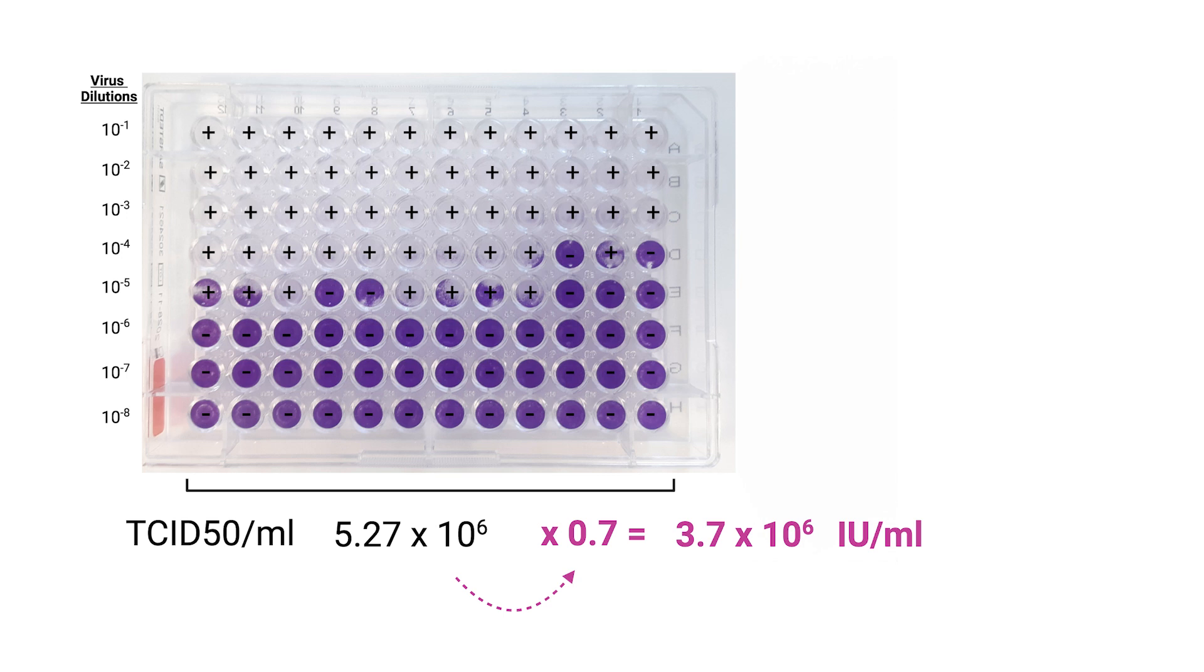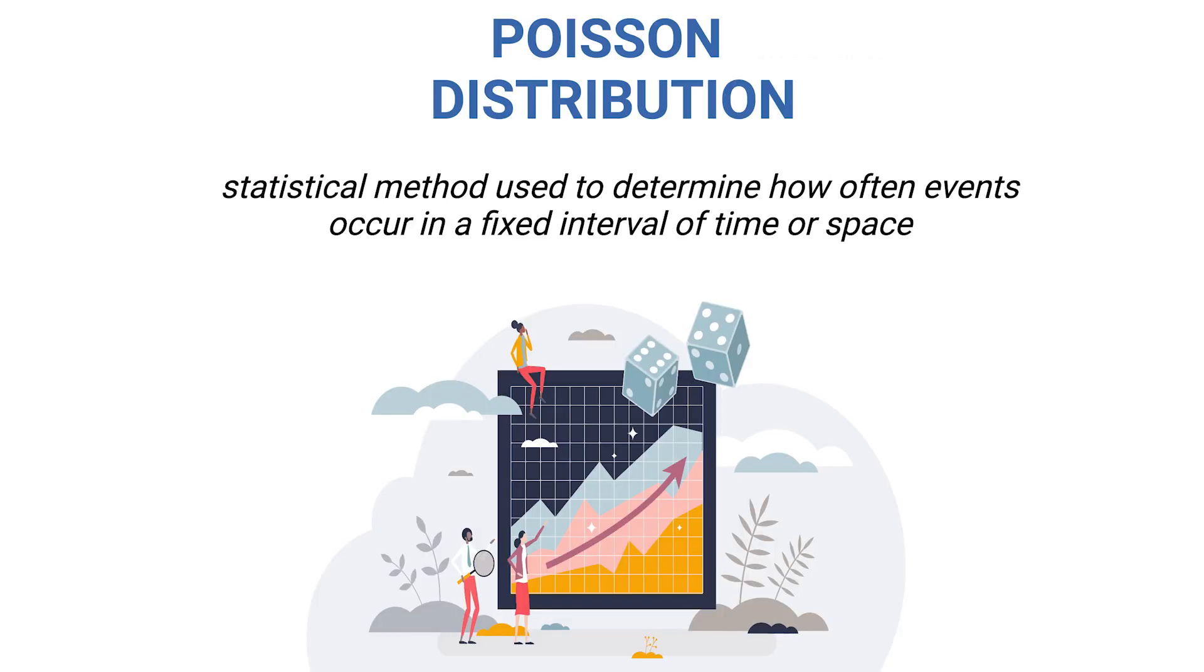But why 0.7? This conversion factor is deeply rooted in the probabilities underlying the TCID-50 method. But let's explore this concept further. When we say that about 50% of our cell cultures are infected, we're actually using a model based on the Poisson distribution. This is a key statistical method used to determine how often events occur over a set interval of time or space.